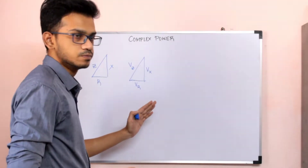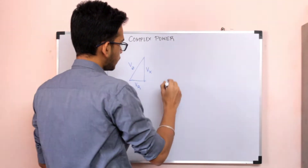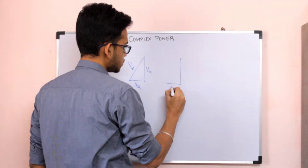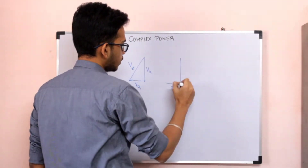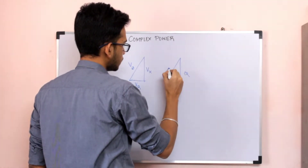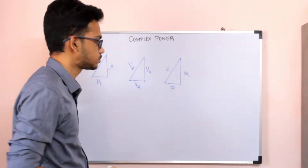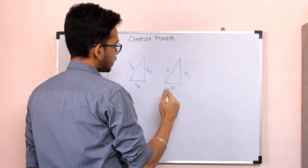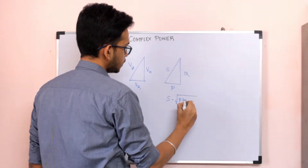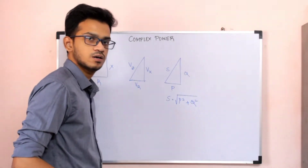In the triangle, horizontal axis is the real power, vertical axis is the reactive power, and the hypotenuse is the apparent power — these are the three quantities. The apparent power is the square root of real power plus reactive power.